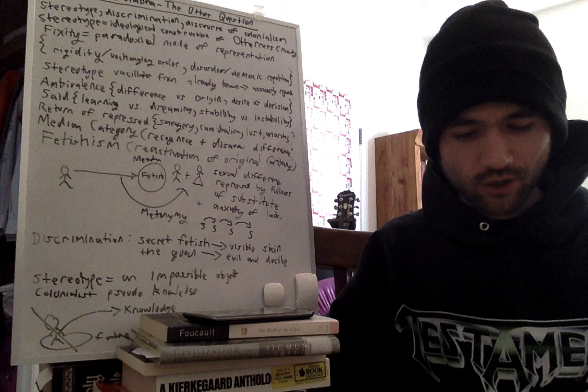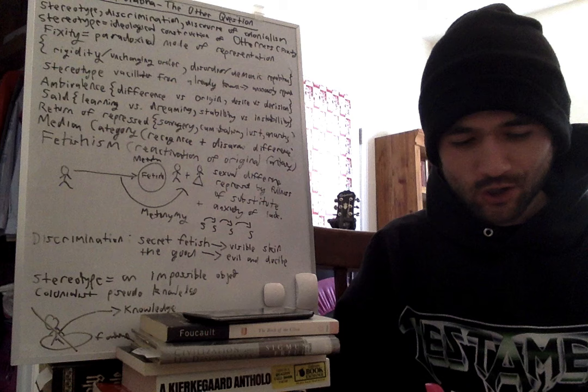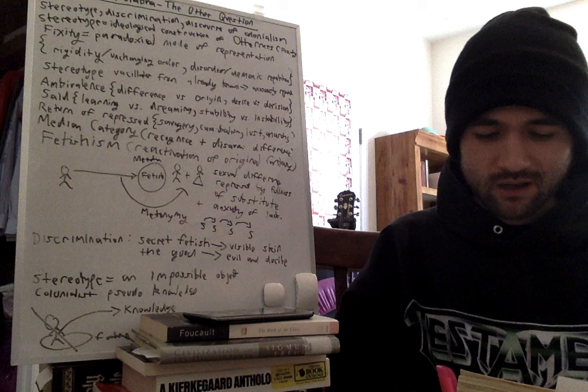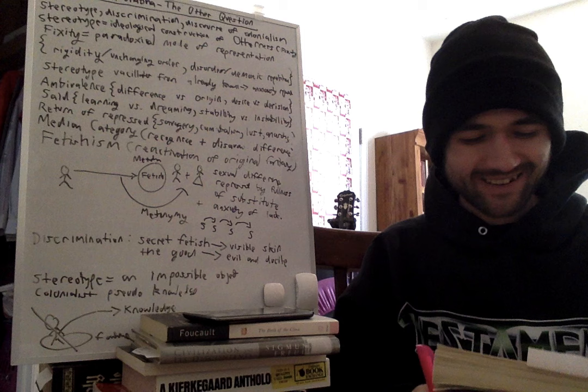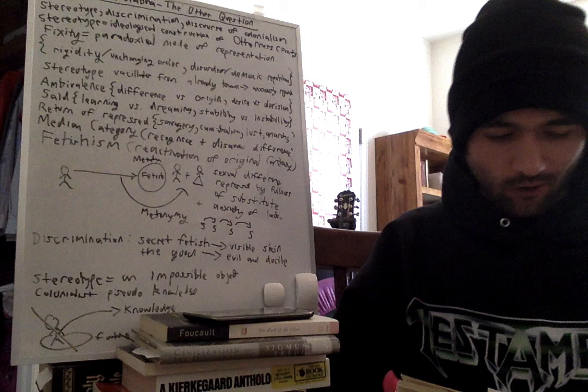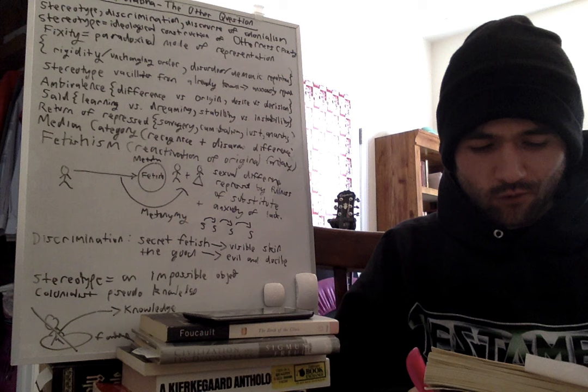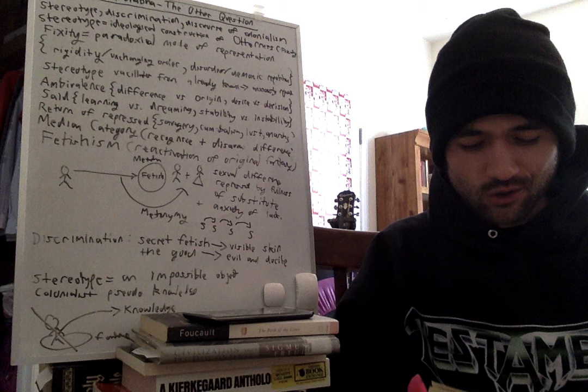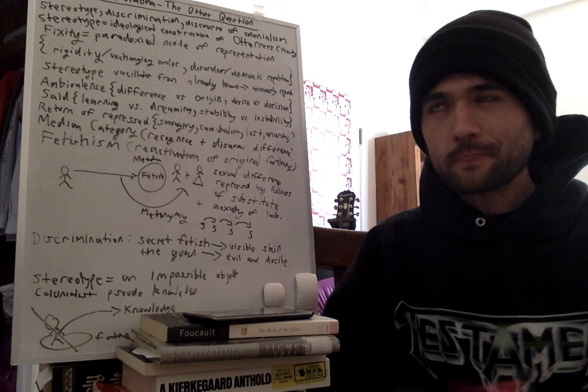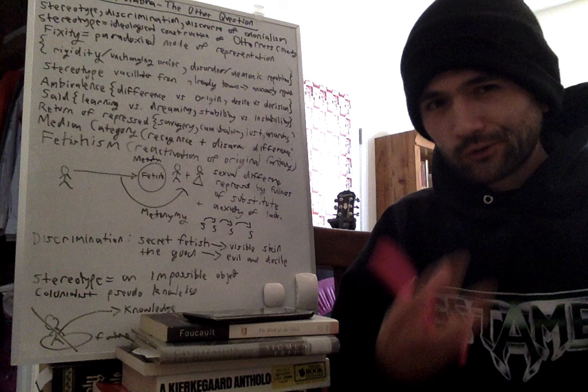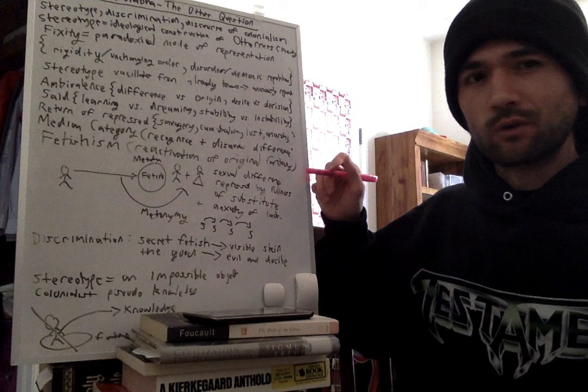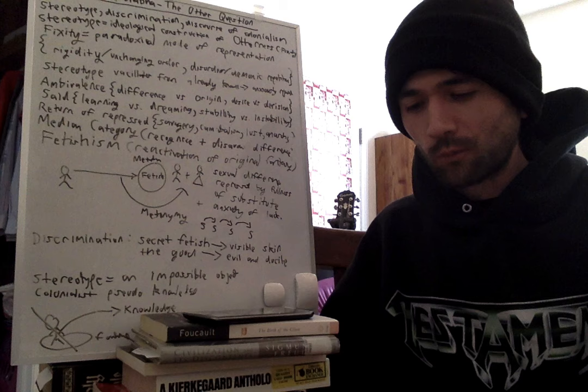He's going to argue that even the median category, as it is in Said—I'll quote from Said right now: sometimes one tends to stop judging things either as completely new or completely well-known. A new median category emerges that allows you to see new things for the first time as versions of a previously known thing. It's not so much a way of receiving new information as it is a method of controlling what seems to be a threat to some established view of things. Homi K. Bhabha is going to argue that this median category shows us a move between the recognition of cultural difference and its disavowal by affixing the unfamiliar to something established in a form that is repetitious and vacillates between delight and fear.